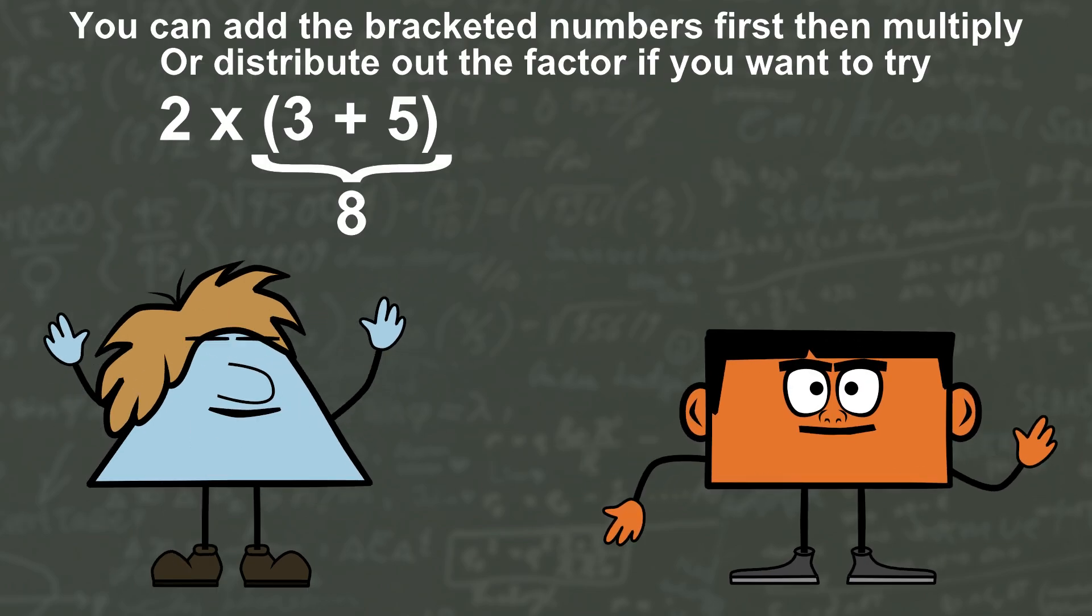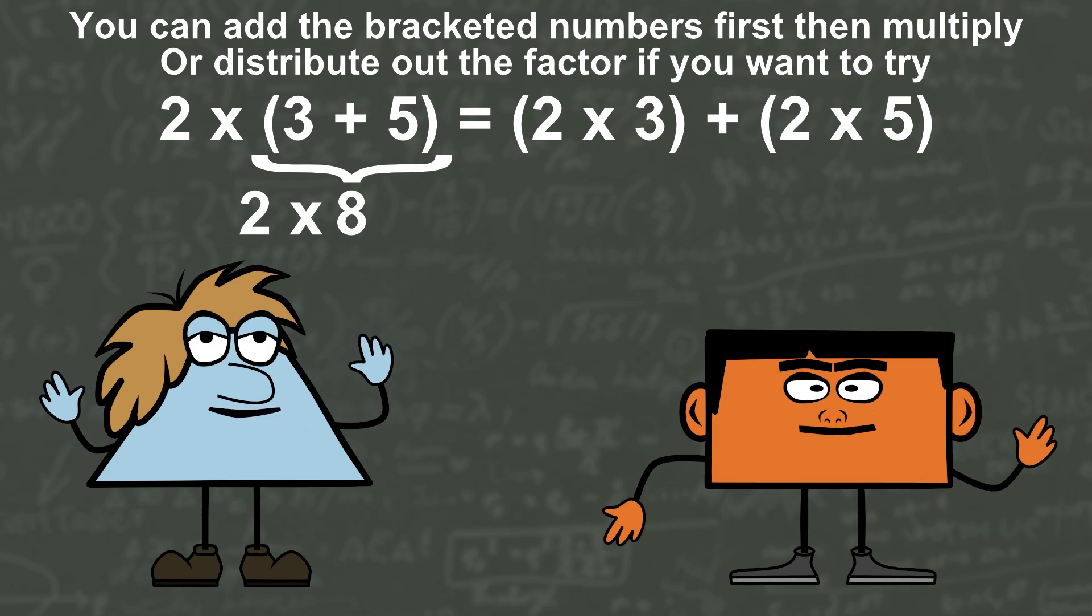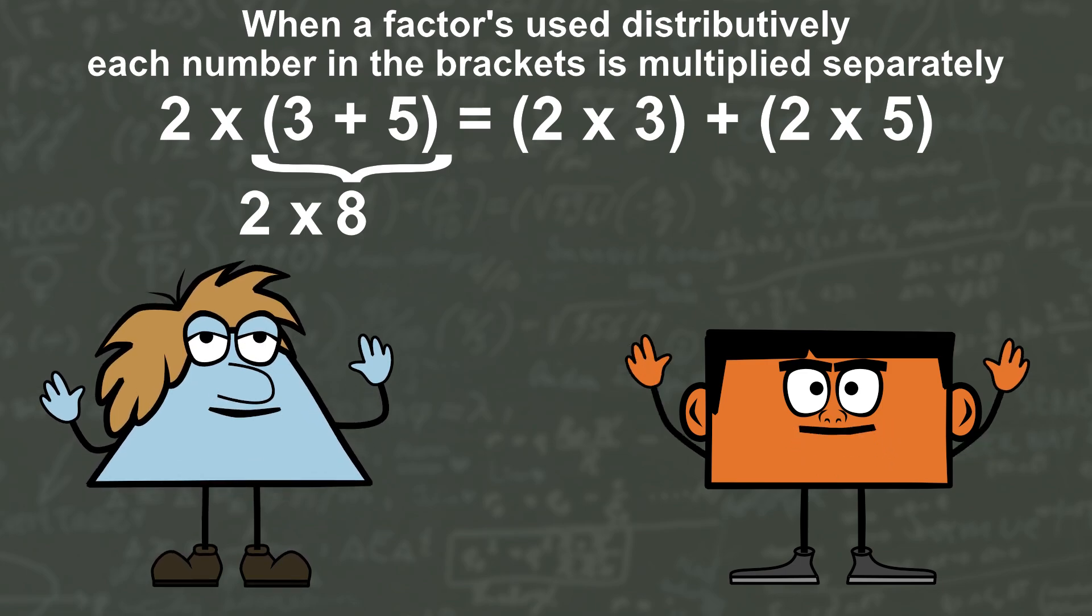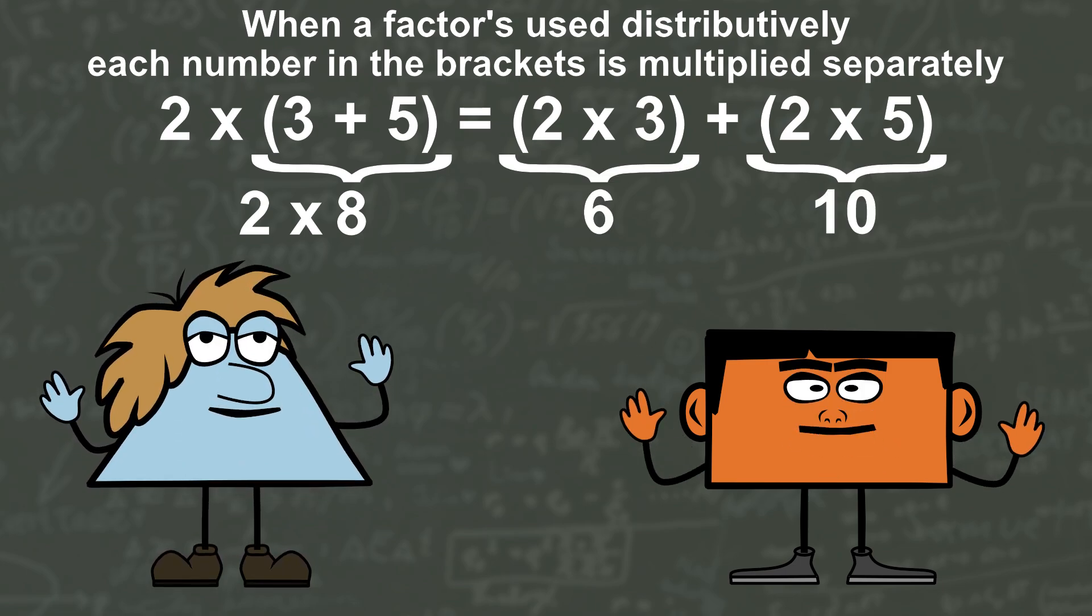You can add the bracketed numbers first then multiply, or distribute out the factor if you want to try. a times brackets b plus c equals a times b plus a times c. When a factor is used distributively, each number in the brackets is multiplied separately.